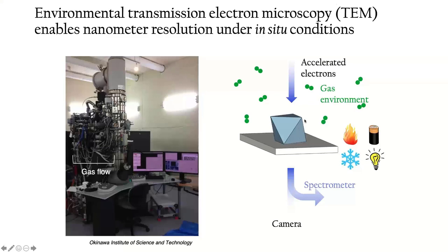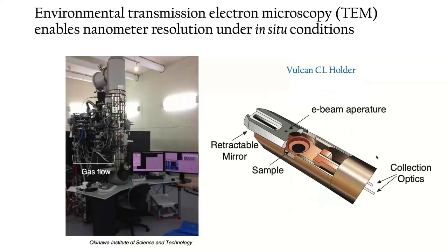Like a traditional TEM, accelerated electrons interact with your material of interest. Those electrons will pass through either to a spectrometer for electron energy loss spectroscopy, or to collect X-rays for energy dispersive X-ray spectroscopy, or pass straight through to the camera. What's unique about environmental and in-situ microscopy is that the gas environment allows you to visualize dynamic conditions at the nanoscale. This is also enabled by a series of holder developments — including heat holders for thermal properties, electrical biasing holders, cryogenic holders, and today's topic: optical illumination. To couple light into the microscope, the Dione lab has been using the Vulcan CL holder.